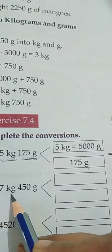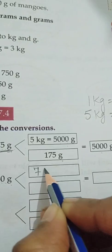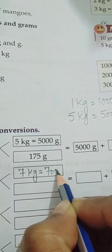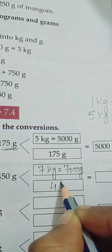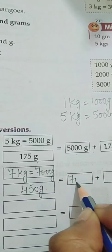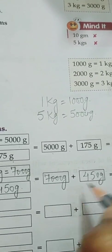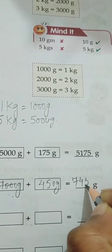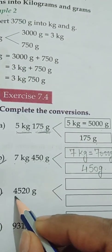The next part is seven kilogram 450 gram. Seven kilograms means seven thousand grams. Seven thousand grams plus four hundred fifty grams, when we add these, it will be seven thousand four hundred fifty grams.